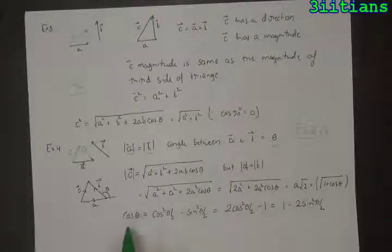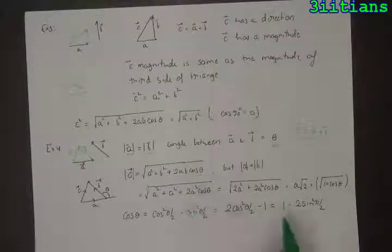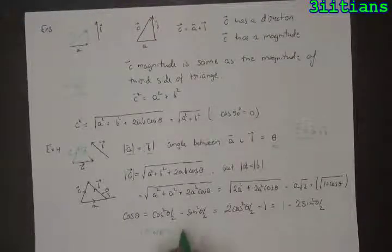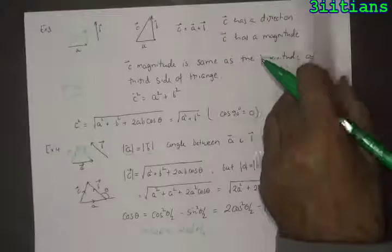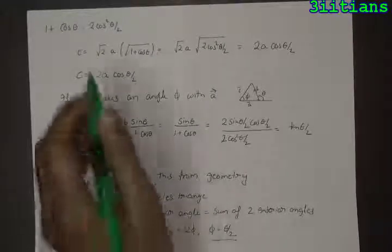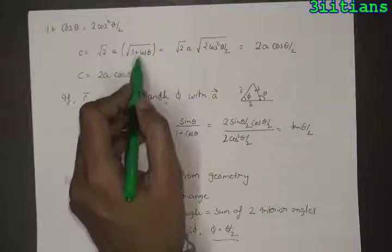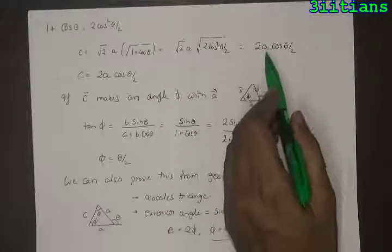Now I can use the trigonometric identity that cos theta equals 2 cos squared (theta/2) minus 1, or equivalently 1 minus 2 sin squared (theta/2). Therefore 1 plus cos theta equals 2 cos squared (theta/2). Substituting this value, c vector equals root 2 into a into root of 2 cos squared (theta/2), which gives c equal to 2a cos(theta/2).